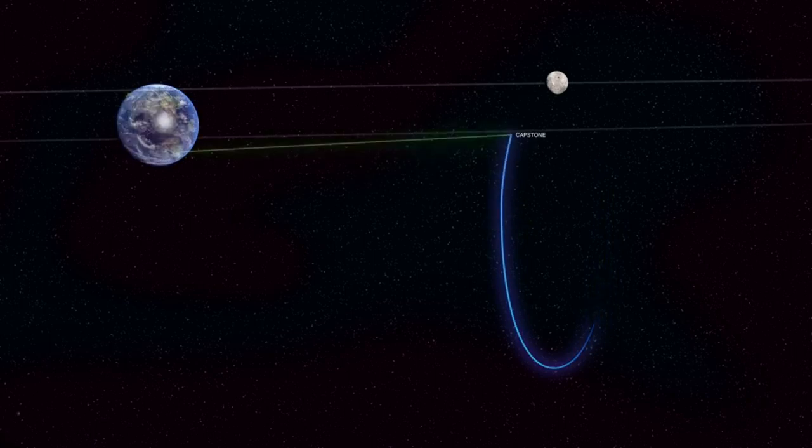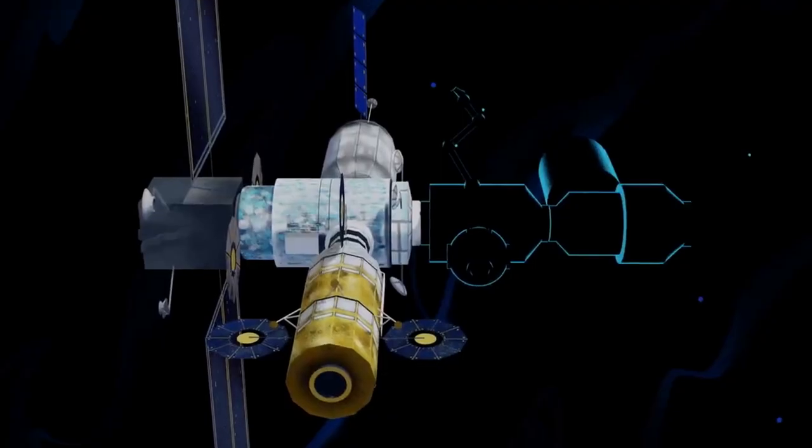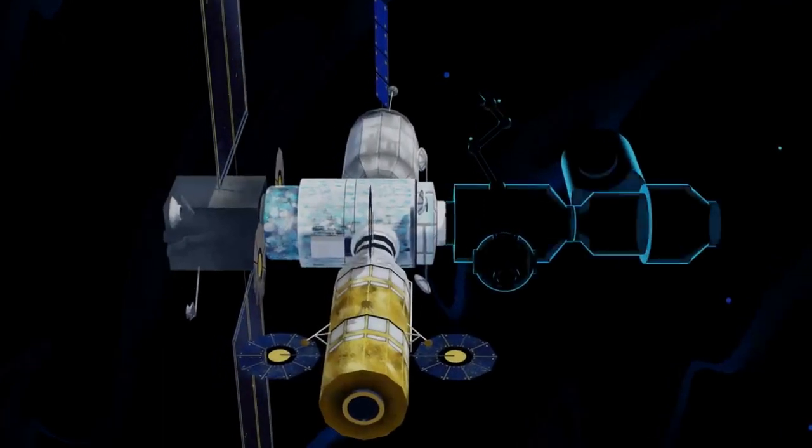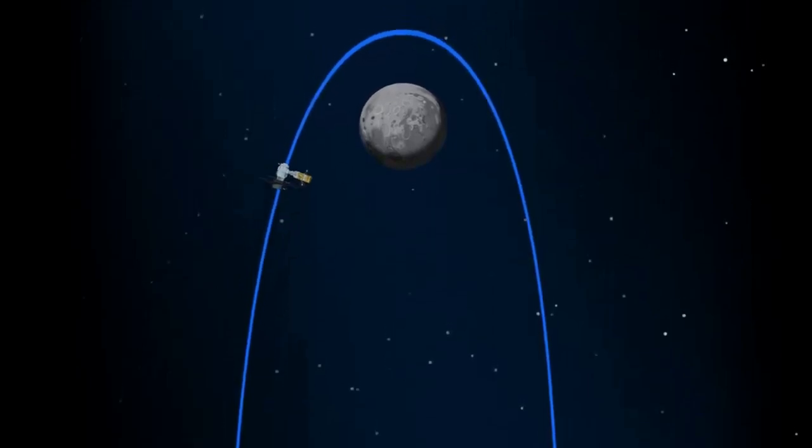The orbit, formerly known as a near-rectilinear halo orbit, NRHO, is significantly elongated. Its location at a precise balance point in the gravities of Earth and the Moon offers stability for long-term missions like Gateway, and requires minimal energy to maintain.